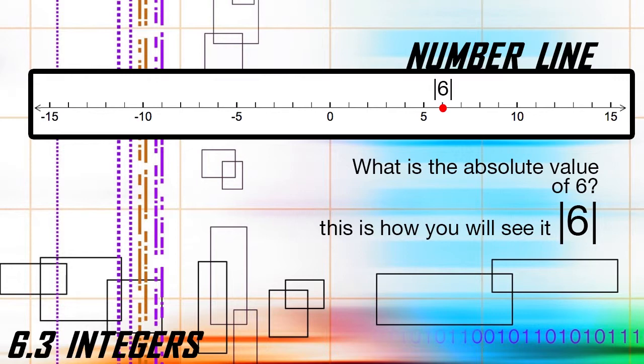What about the absolute value of positive six? Step one, plot six on the number line. Step two, label this point as the absolute value of six with two bars to the left and right. Step three, count the units to return to zero. Step four, the absolute value of six is six because positive six is six units away from zero — and that's the distance.